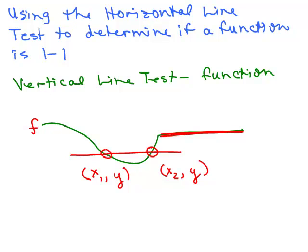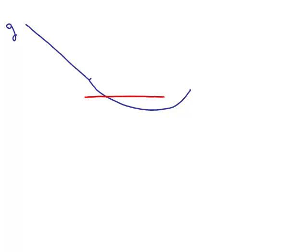Let's look at another example. This is the graph of some function. First, it passes the vertical line test, so it is a function. But does it pass the horizontal line test? No — there's a problem, so this is not one-to-one.